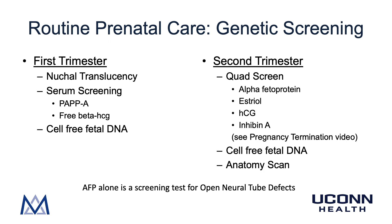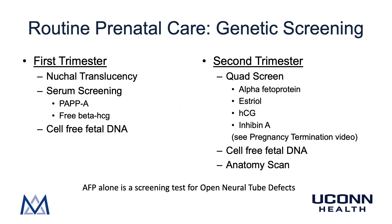In the second trimester, the traditional quad screen is still available to patients, from approximately 15 to 20 weeks. The four hormones checked in the quad screen include alpha-fetoprotein, estriol, HCG, and inhibin. Please see our pregnancy termination video for a helpful chart reviewing lab values for these quad screen tests and their association with aneuploidy. Patients in the second trimester are still able to have cell-free fetal DNA — in fact, there is a higher fraction of cell-free fetal DNA as the pregnancy progresses. Finally, patients are offered a fetal ultrasound at 18 to 22 weeks to review the anatomy of the fetus, and based on findings, the risk of aneuploidy can be adjusted. Also, alpha-fetoprotein alone is a screening test for open neural tube defects and can be performed from 15 to 22 weeks.